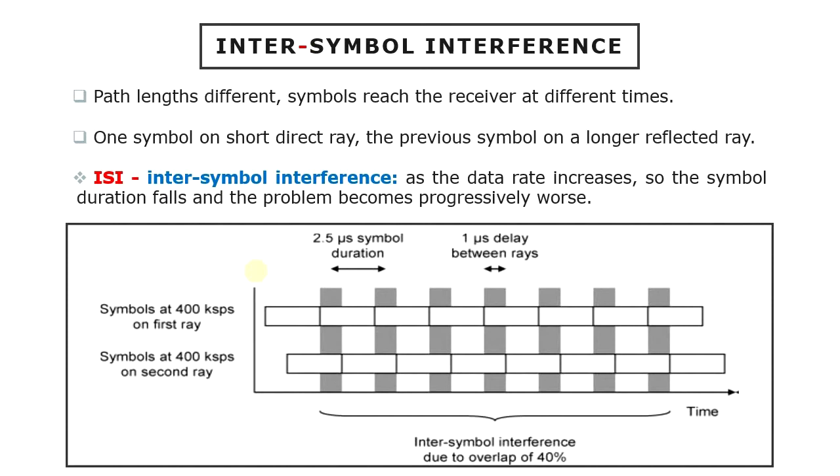This causes a large amount of inter-symbol interference, which will greatly increase the error rate in the receiver. As the data rate increases, so the symbol duration falls and the problem becomes progressively worse. This makes inter-symbol interference a problem for any high data rate communication system.